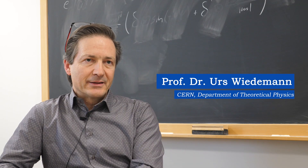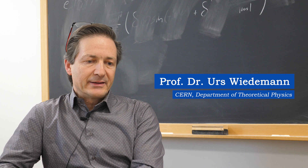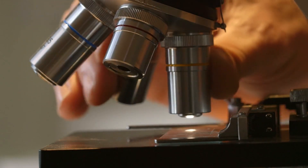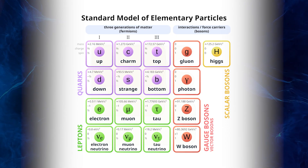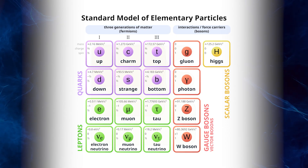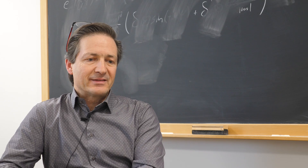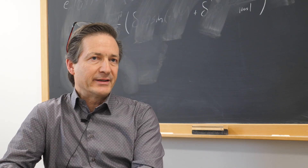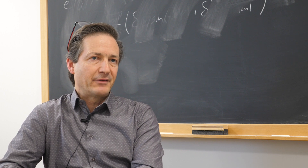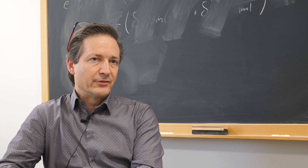Most generally speaking, the standard model is the model that encompasses all we know about the microscopic world on the level of single particles. Everything we know fits into the standard model, and it can be written in a form that fits on a t-shirt. It's a very compressed way of formulating knowledge that starts with Maxwell and Einstein and goes up to the great theoretical discoveries and experimental verifications of the 20th and 21st century. All of particle physics rests on this incredible theory, but there are some obvious limitations that need to be addressed.